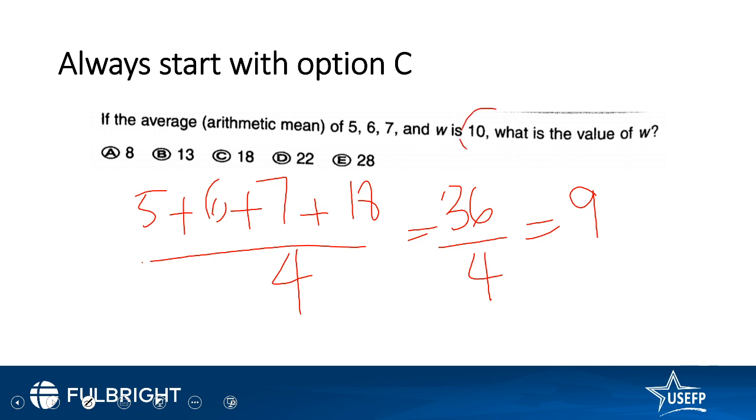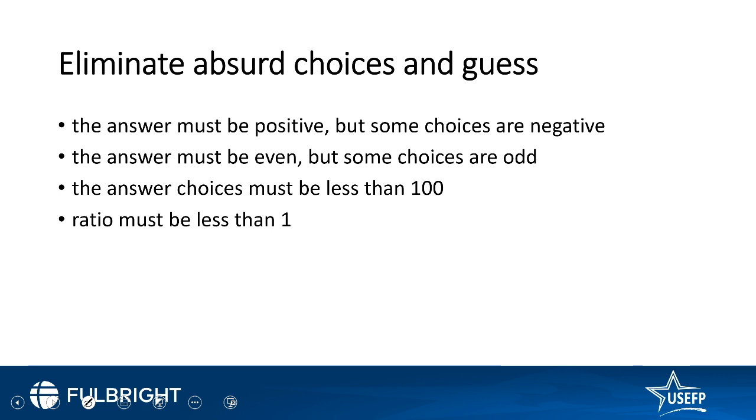And what we are looking for is 10, so we know that we need to substitute something which is bigger than 18. So this automatically crosses out these three options, and if we substitute instead of 18, 22, this comes out to be 10. So option number D is correct. Always start with option number C.